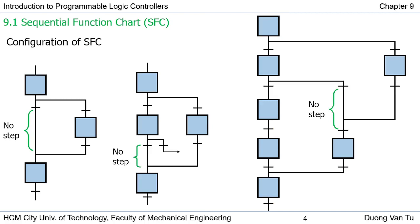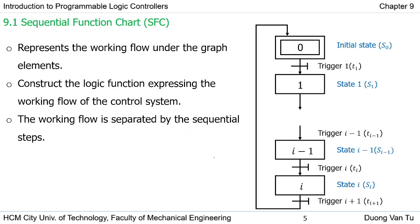When you use SFC to prepare the control program, there is no specific fixed configuration. You can use any configuration — for example, sequential steps, parallel steps, or no step after a transition — depending on your application requirement. There is no fixed configuration of SFC; it depends on your application requirement and how to solve the problem.